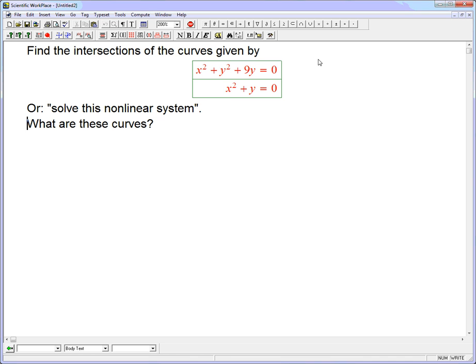Let's do this problem. Find the intersections of the curves given by x squared plus y squared plus 9y equals 0, and x squared plus y equals 0. So another way to say this is solve a nonlinear system. It's two equations and two unknowns, and they're not linear functions anymore. They're not straight line functions. They have squares in them.